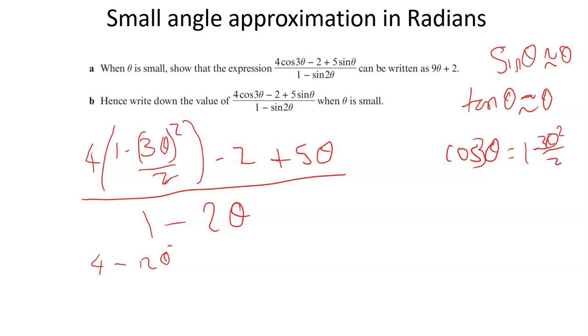No it's not, because it's a 9. 3 squared is 9, 9 times 4, 36 theta squared over 2, and of course we can cancel the 36 over 2 and have 18. So 4 minus 18 theta squared, minus 2 plus 5 theta, all over 1 minus 2 theta.